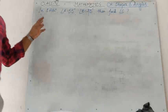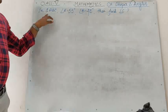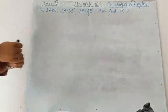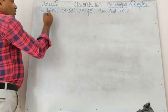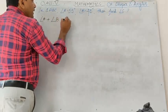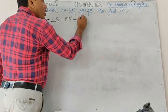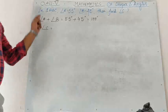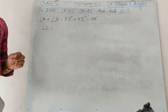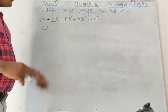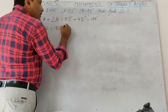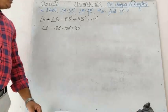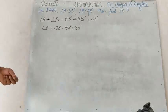Now, the application of the angle sum property. In triangle ABC, angle A = 55 degree and angle B = 45 degree, so angle A + angle B = 100 degree. Since the sum of all three angles is 180 degree, angle C = 180 − 100 = 80 degree. In this way we can apply the angle sum property of a triangle.